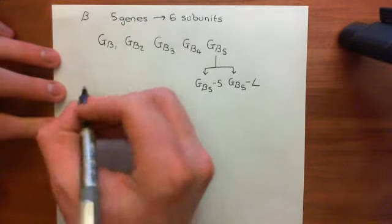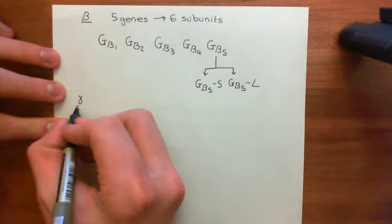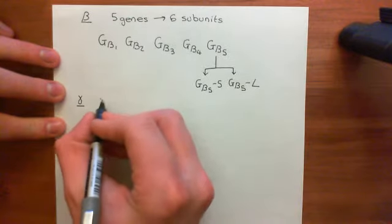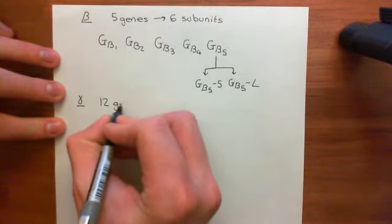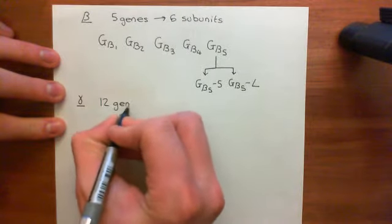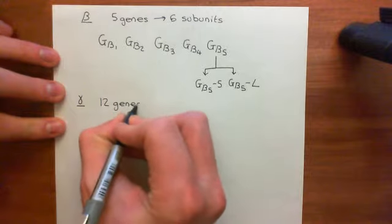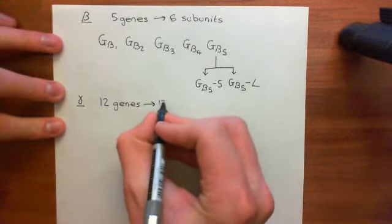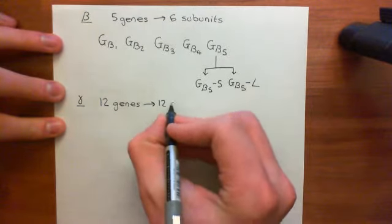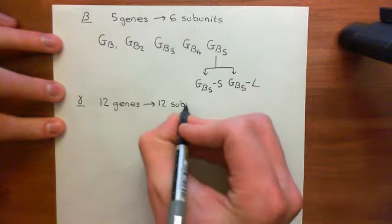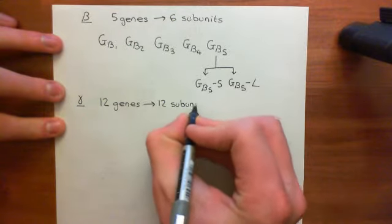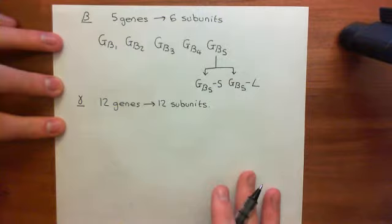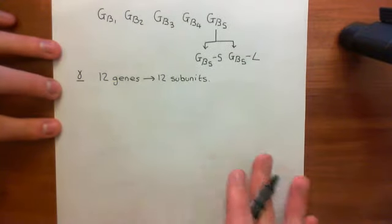Moving on to the gamma subunits, there are 12 genes for gamma subunits, and there are only 12 actual gamma subunits. In this case, we don't know of any gamma genes that have multiple splice variants.